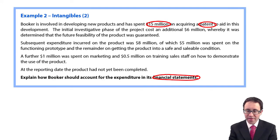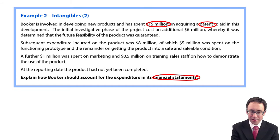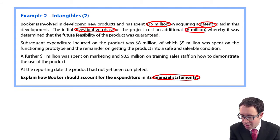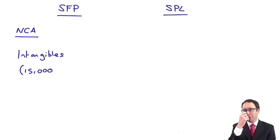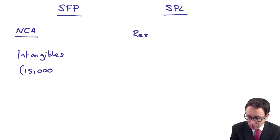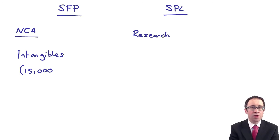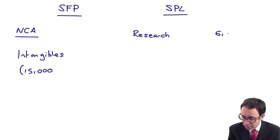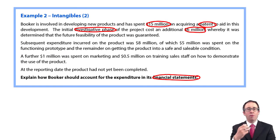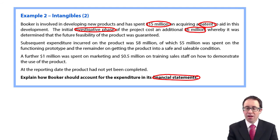It then says the initial investigative phase of the project cost an additional $6 million, whereby it was determined that the future feasibility of the product was guaranteed. If it's expenditure on an investigative phase, that $6 million is effectively research — money that's spent to see whether or not we can develop this product further. That's too far away from the final product to be able to capitalize that expenditure.